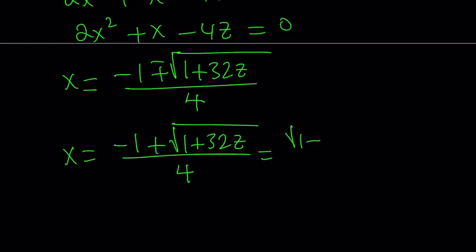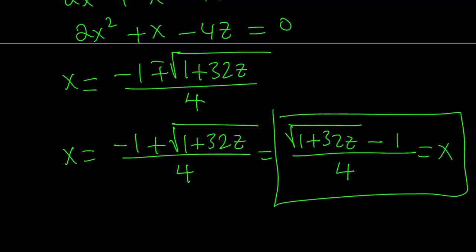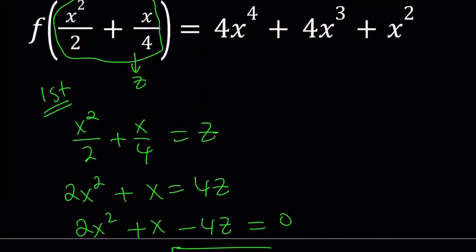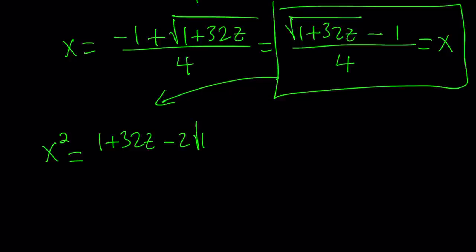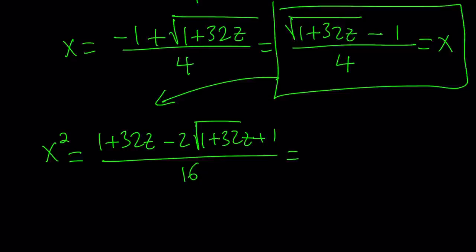I can write it a little nicer by putting the radical first, writing it as a difference: x equals the square root of 1 plus 32z minus 1, all over 4. This is important because now I need to use this expression on the right-hand side. I need x to the fourth, x to the third, and x squared. Let's square both sides: x squared equals 1 plus 16z minus the square root of 1 plus 32z, all over 8.